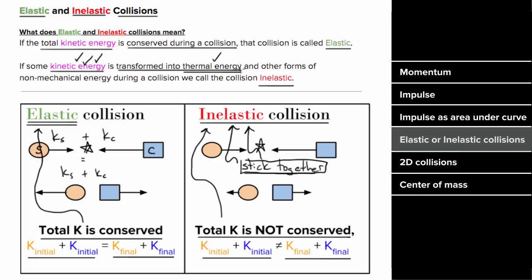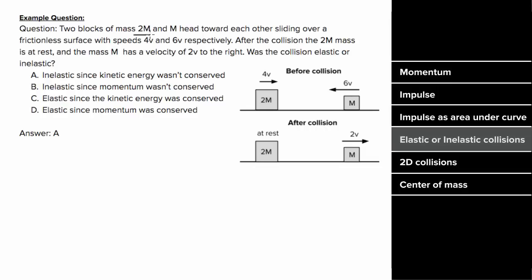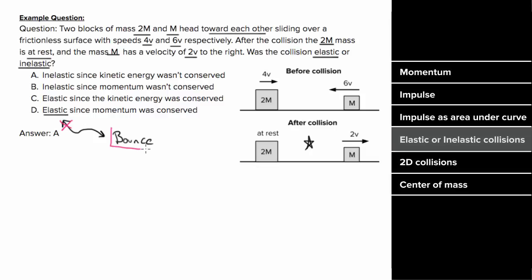Let's say two blocks of mass 2m and m head toward each other with speeds 4v and 6v respectively. After they collide, the 2m mass is at rest and mass m has a velocity of 2v to the right. Was this collision elastic or inelastic? You might think that since the objects bounced, the collision must be elastic — but that's not true. Bouncing is a necessary condition for elastic collisions, but it isn't sufficient.